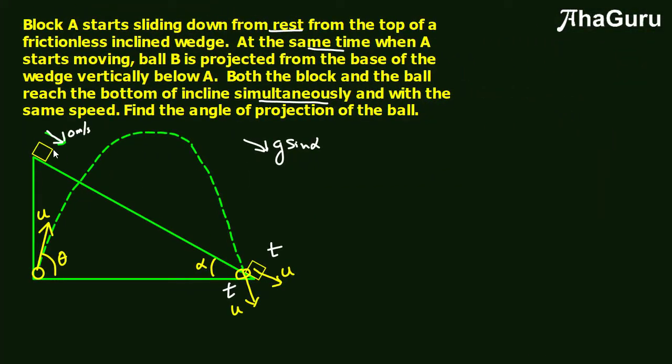We must be careful about the number of variables we introduce. In this problem, no numerical values are given — only that the final speeds are the same and the travel times are the same. So the two good variables to assume are u and t. Let us solve this problem using as few variables as possible.